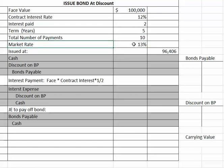The market rate of interest is 13%. As you read through the chapter, you'll know that if the market rate is higher than our contract rate, that means everybody can get a higher interest rate by investing in someone else. So what's going to happen is we're going to sell our bond at a discount.